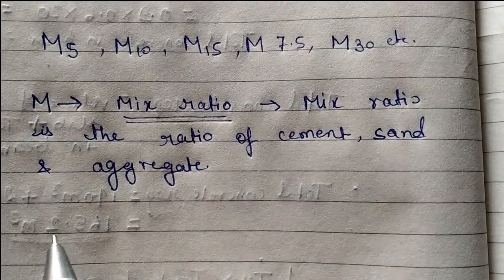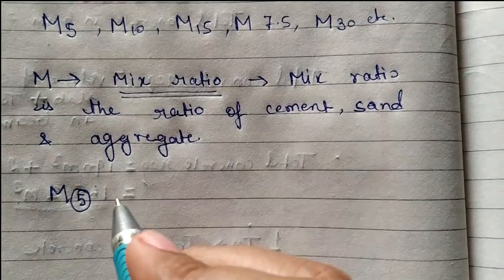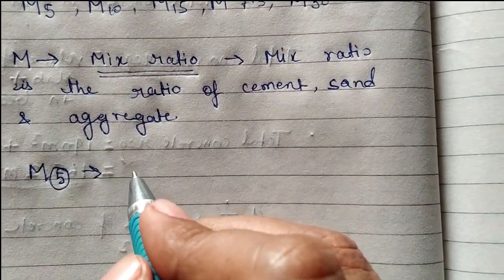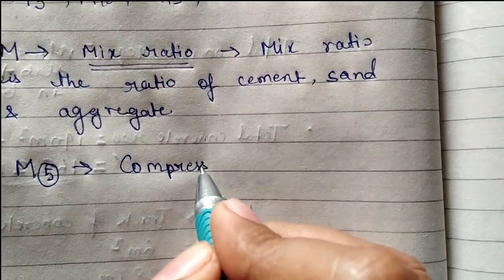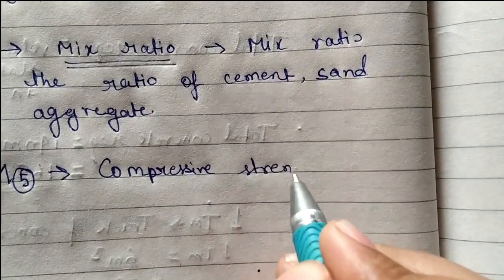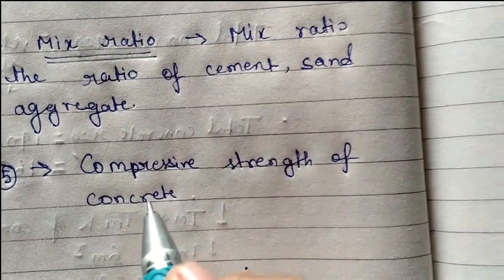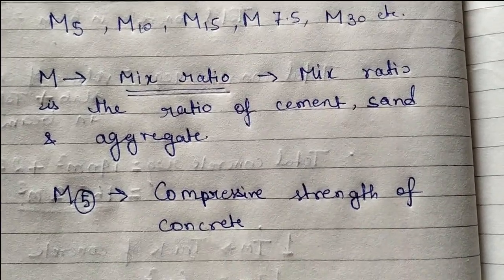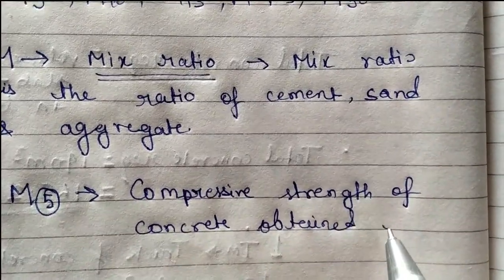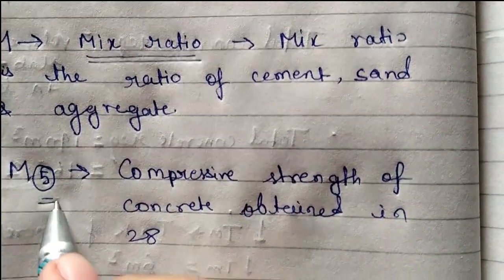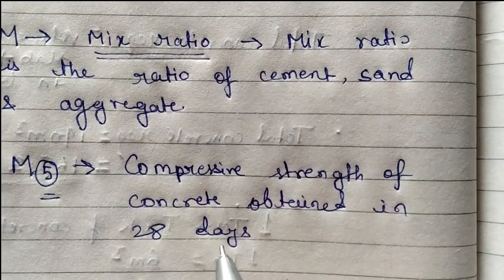Friends, what is this 5 in M5 grade of concrete? This 5 is the compressive strength of concrete obtained in 28 days.